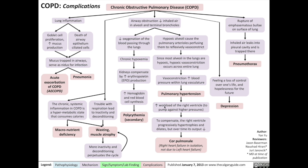The high blood pressure in the lungs will increase the workload of the right ventricle, which must pump against higher blood pressures. To compensate, the right ventricle progressively hypertrophies and dilates, and over time its output will become reduced. This results in cor pulmonale — the failure of the right heart in isolation and not due to left heart failure.